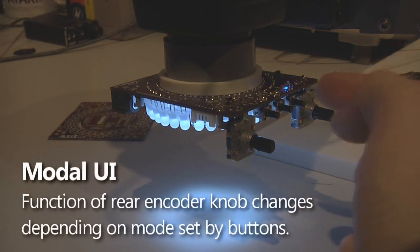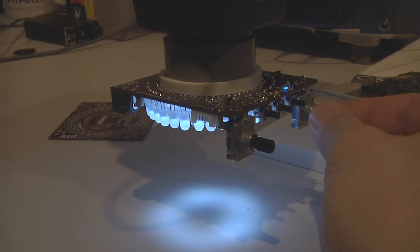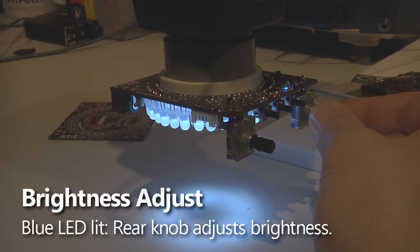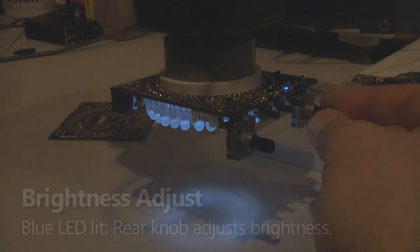The user interface is modal, and the function of the rear encoder knob is controlled by these buttons and the LEDs. When the blue LED is lit, the rear knob is actually controlling brightness. You can see when you turn it back it gets brighter. Turn it forward, it gets dimmer.